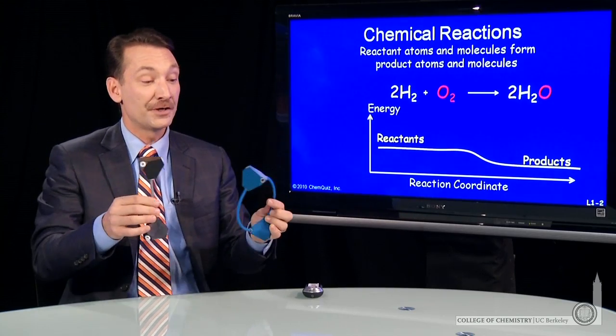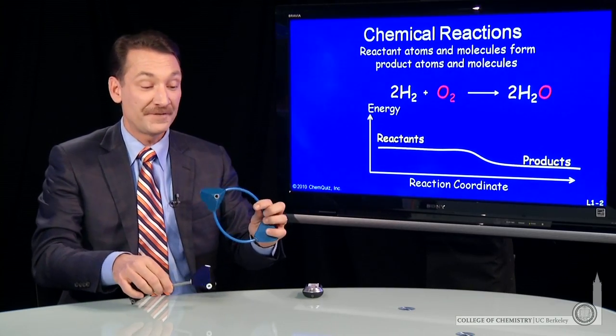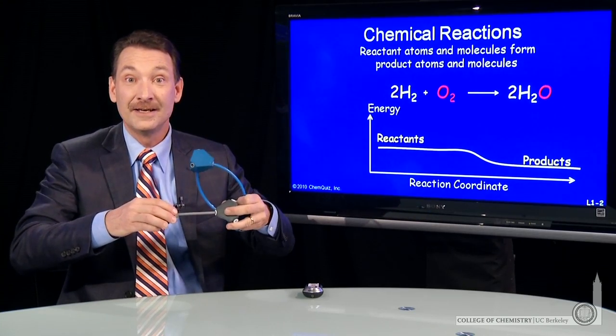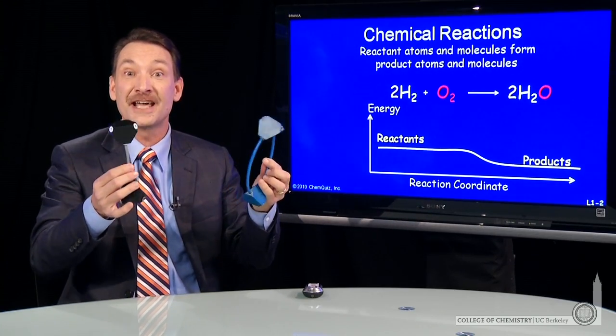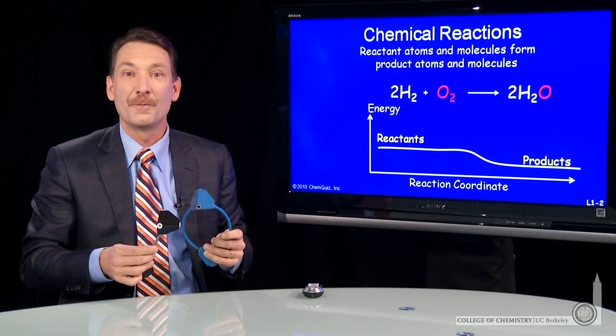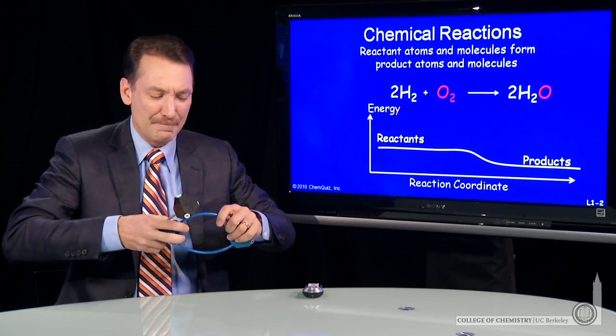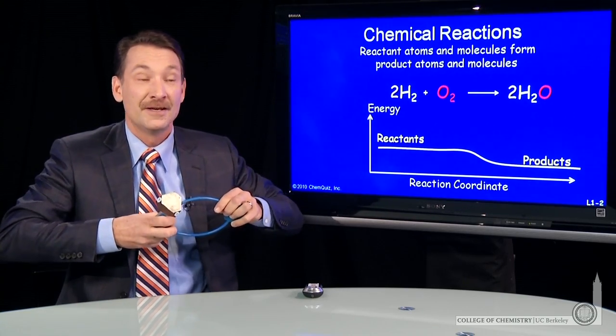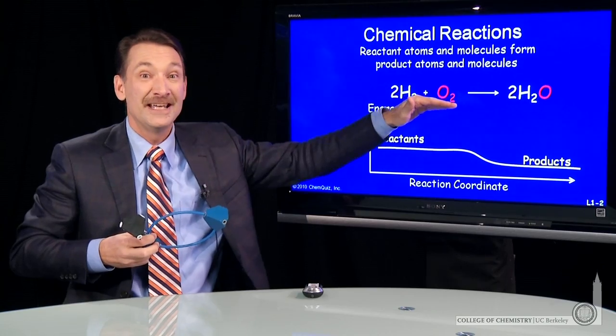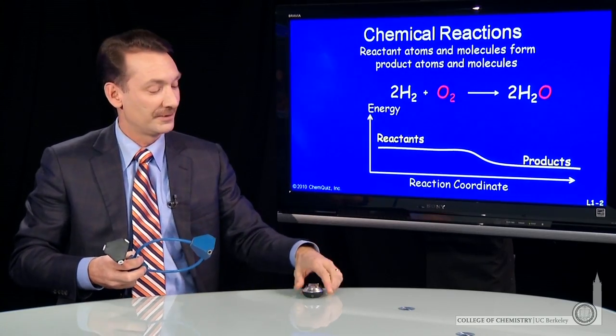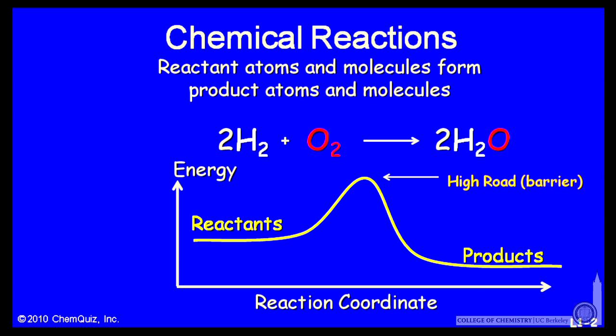Well, in order to form water from oxygen and hydrogen, we have to pull apart and strain the bonds that are holding the hydrogen and oxygen together in their own molecules, and then form the bonds that form the water molecule. That pulling and stretching and rearranging of bonds requires energy. So there's a high energy intermediate state between the reactants and products. We call that a high road, a high road barrier, between the products and reactants.